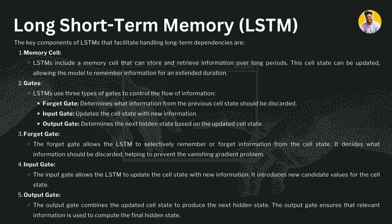The input gate allows the LSTM to update the cell state with new information, introducing new candidate values for the cell state. The output gate combines the updated cell state to produce the next hidden state — the weights of the words given to the LSTM network. The output gate ensures that only relevant information is used to compute the final hidden state.